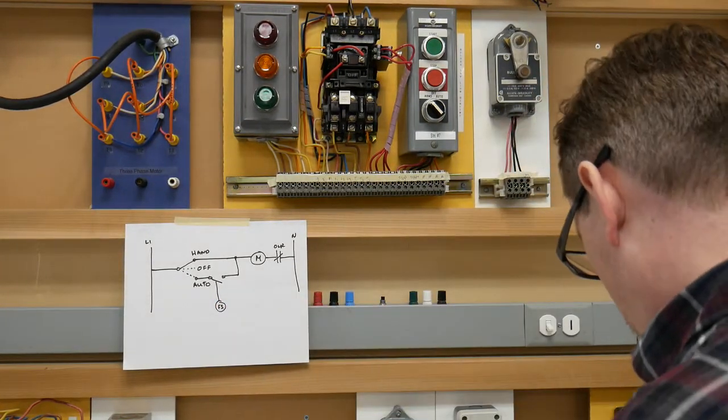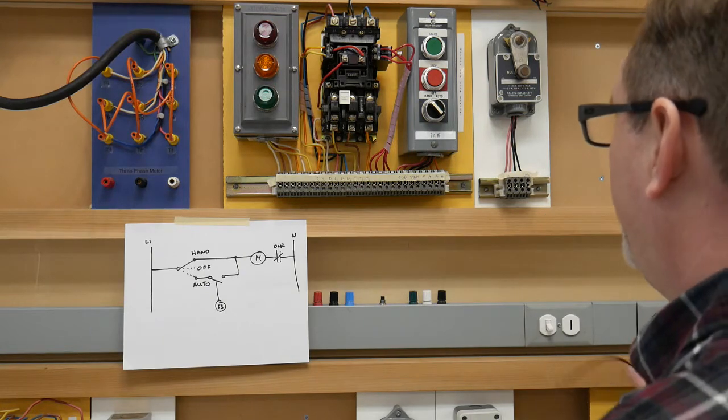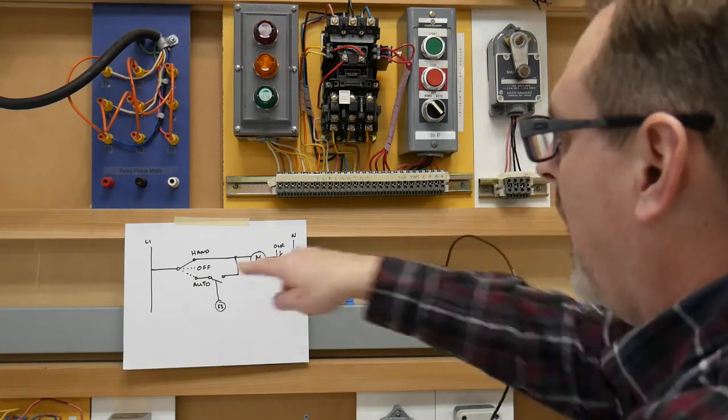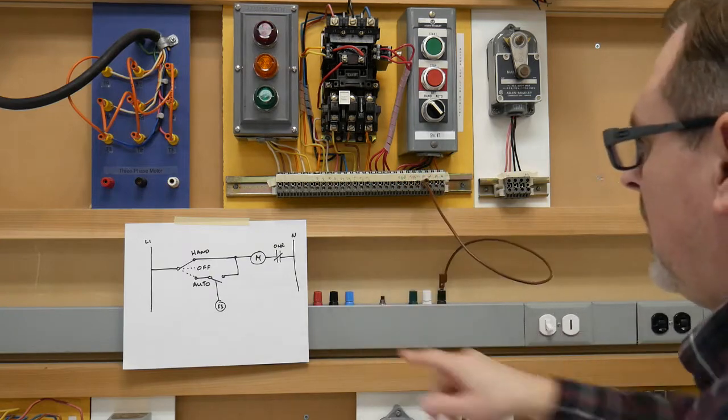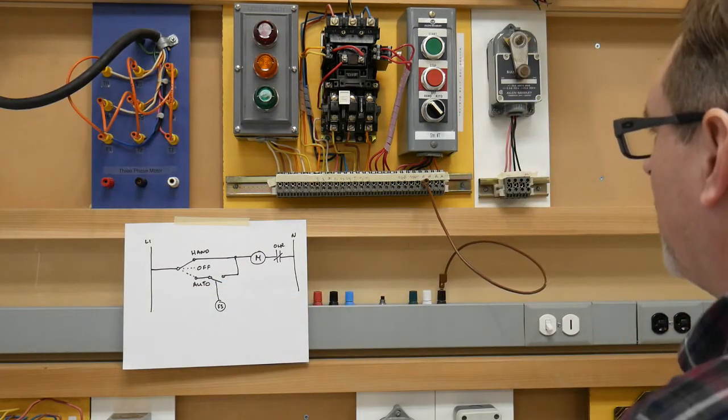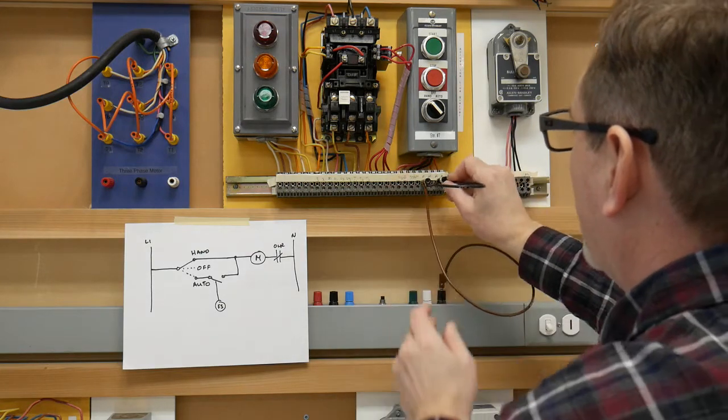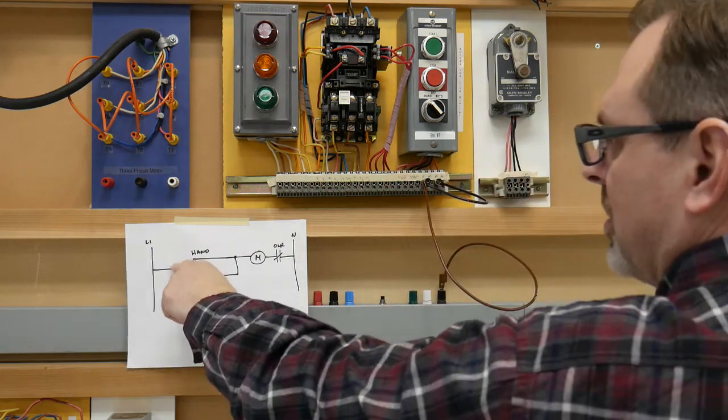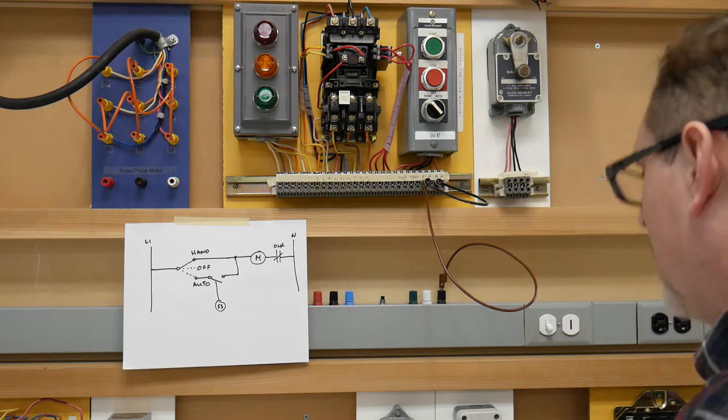So we're going to come out with our line one and we're going to head to the hand-off auto switch. Now they show one pivot point on this but our switch internally we need to feed both the hand and the auto side of it, so that's what I've just done over here.